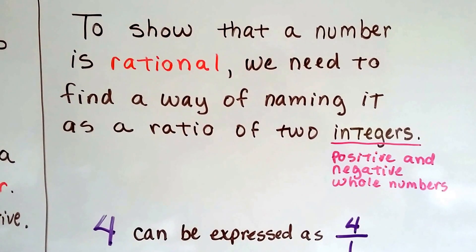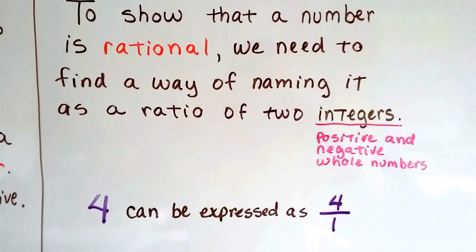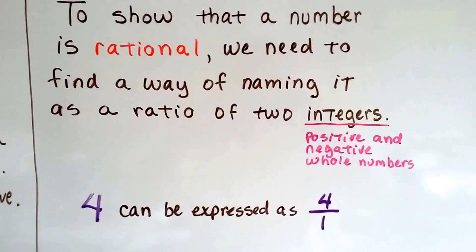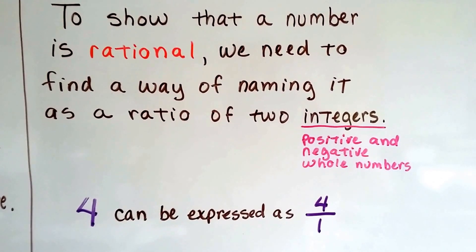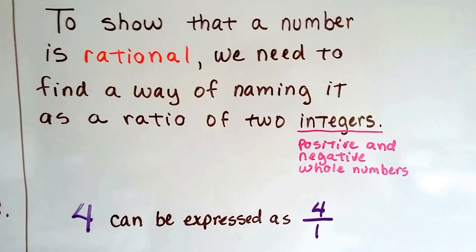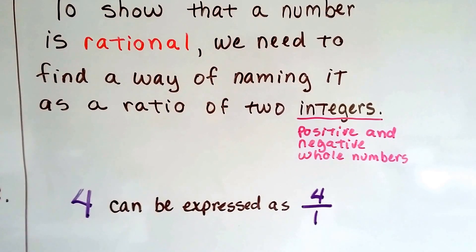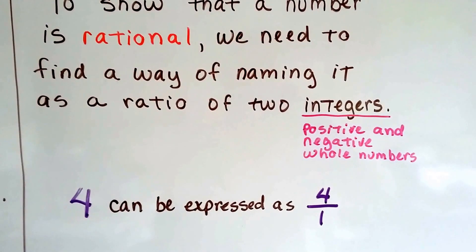To show that a number is rational, we need to find a way of naming it as a ratio of two integers, of naming it as a fraction. Remember, integers are positive and negative whole numbers. So 4 can be expressed as 4 over 1.